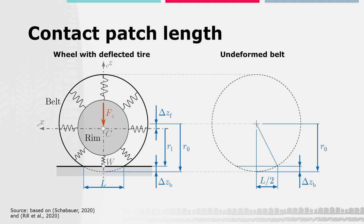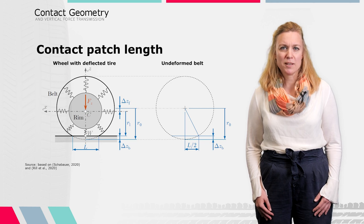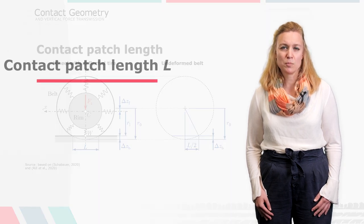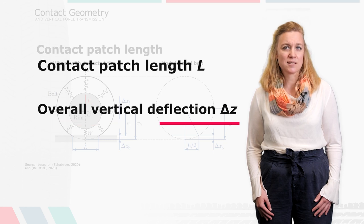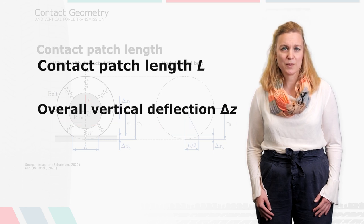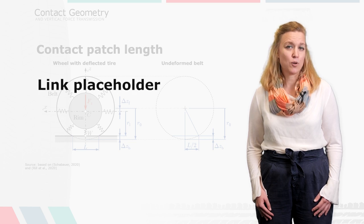We assume that the flank deformations are in the same range as the belt deformations and that delta Zb is much smaller than R0, which holds in normal driving situations. In this way, an approximated relation between contact patch length L and overall vertical deflection delta Z can be derived. The complete derivation can be found under the following link.